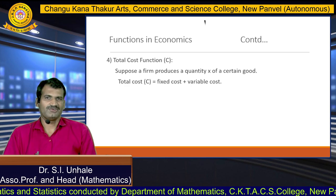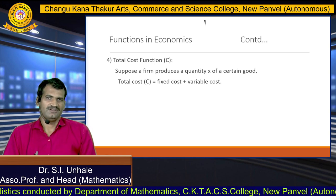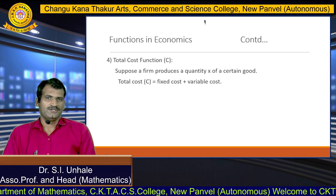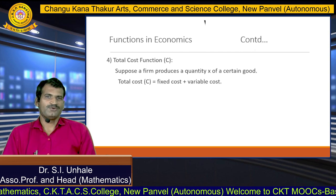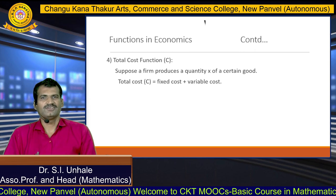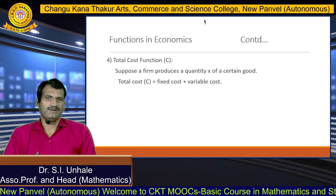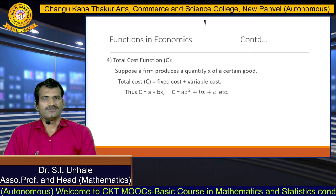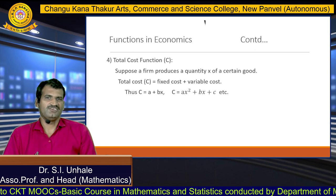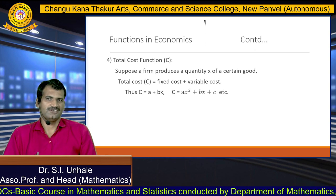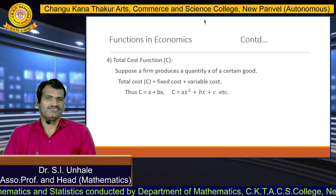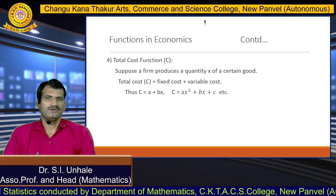The next function from economics is the total cost function. As you are students of commerce and management, you are familiar with the cost function. Suppose the firm produces quantity x of certain goods, then we define the total cost function C as fixed cost plus variable cost. Thus, C equals a plus bx, where a is the fixed cost and bx is the variable cost, and a and b are constants.